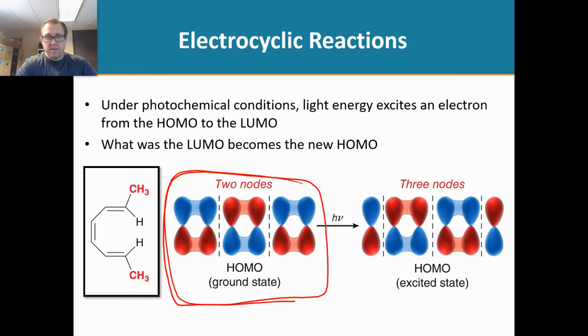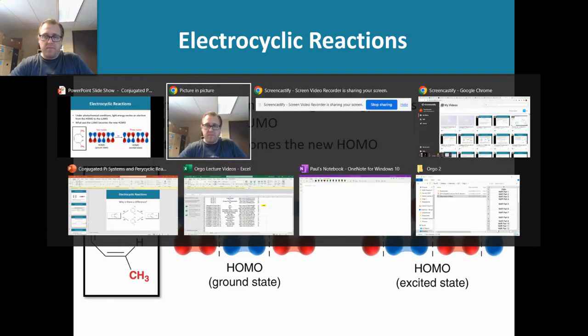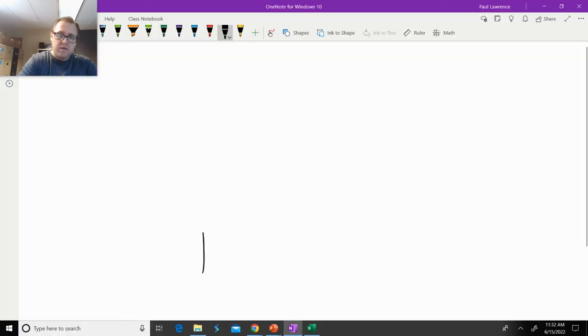But what happens when you take a molecule and add light to it or shine light to it? It promotes one of the electrons in the HOMO to jump up one energy level. So what do I mean by that? Let's draw it out. If we have an energy diagram here, here's some orbitals.